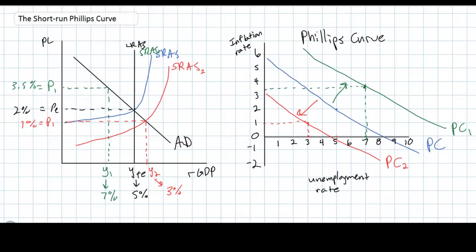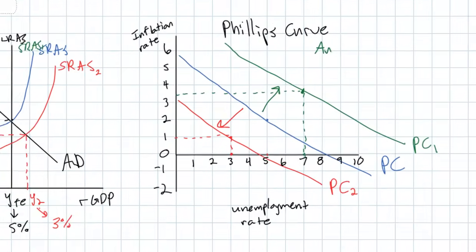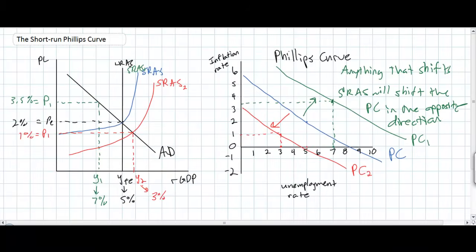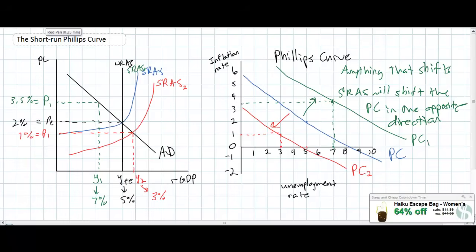Looking back at our short-run Phillips curve model, we can make a couple of conclusions. Anything that causes aggregate demand to shift in the ADAS diagram will cause a movement along the Phillips curve. However, anything that shifts SRAS will shift the Phillips curve in the opposite direction — a leftward shift of aggregate supply causes the entire Phillips curve to shift right, raising both inflation and unemployment, while a rightward shift shifts the Phillips curve left, lowering both. That wraps up our lesson on the short-run Phillips curve. In our next video lesson, we'll talk about the long-run Phillips curve and examine the relationship between inflation and unemployment once all prices and wages have had time to adjust to the equilibrium level of aggregate demand and aggregate supply.